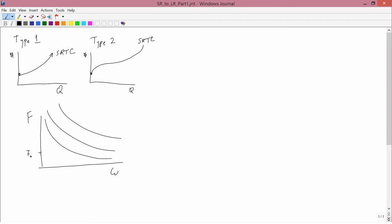And then we figured out what the cross sections of the production function looked like. They might be type 1 or type 2 cross sections, and that's what generated the short run total cost curves.